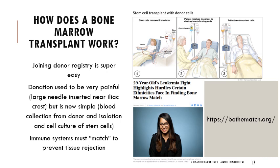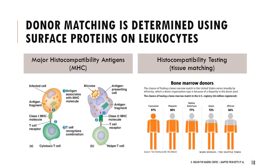This is especially important for people from mixed-race backgrounds, South Asian descent, Latinx descent, or Black individuals, because the immune system must match the donor to prevent tissue rejection. Many young, healthy people with leukemia need a bone marrow match but cannot find one due to their background. This relates to surface proteins — specifically major histocompatibility antigens, MHC 1 and 2 — and histocompatibility testing, or tissue matching, to prevent rejection.